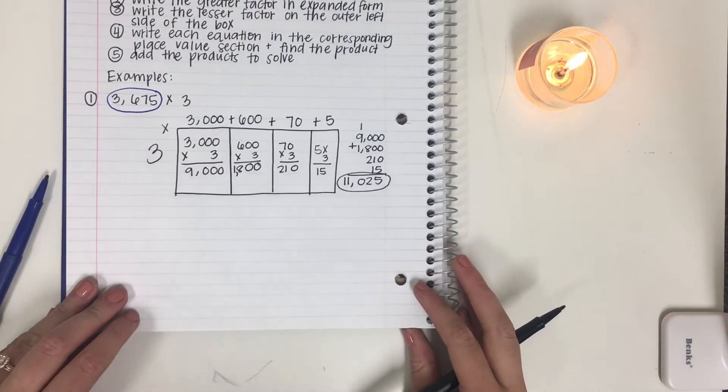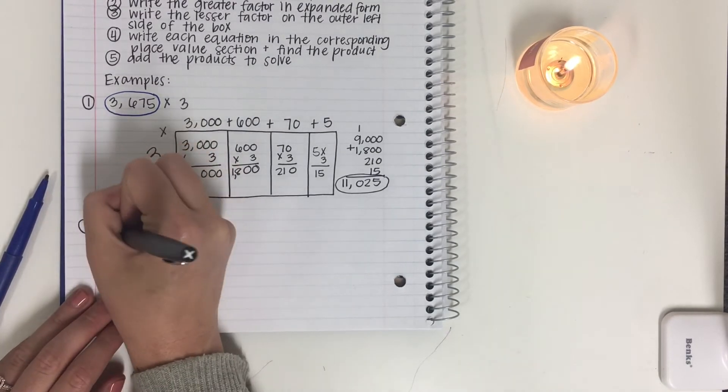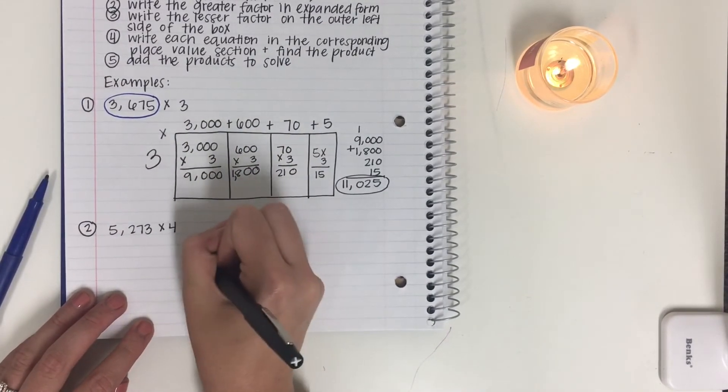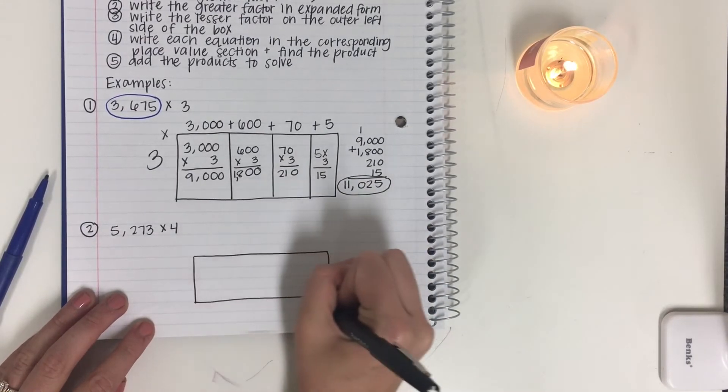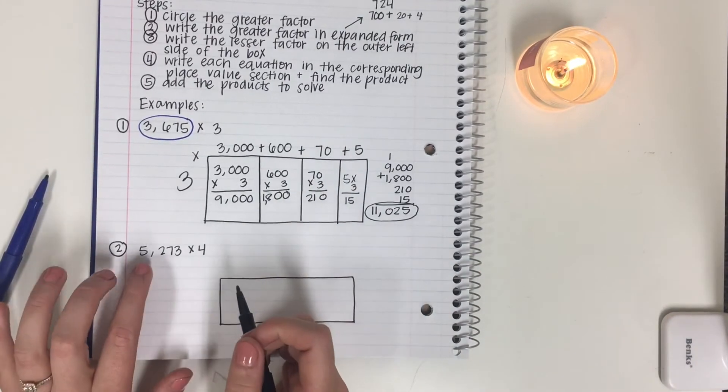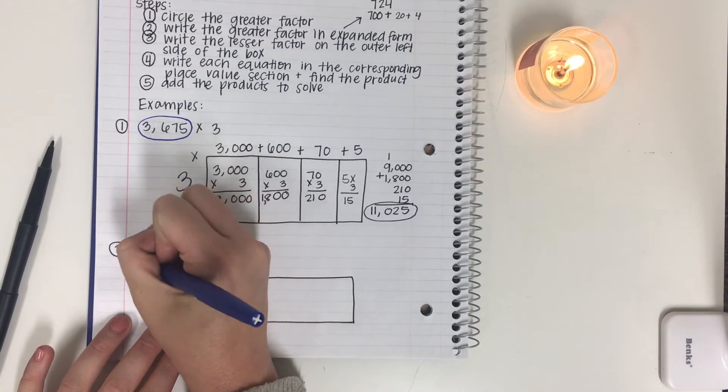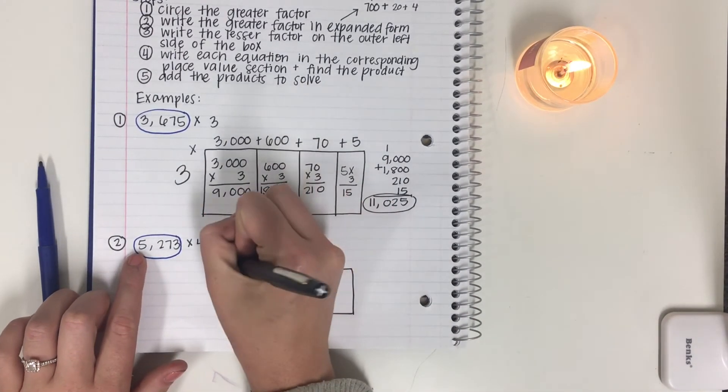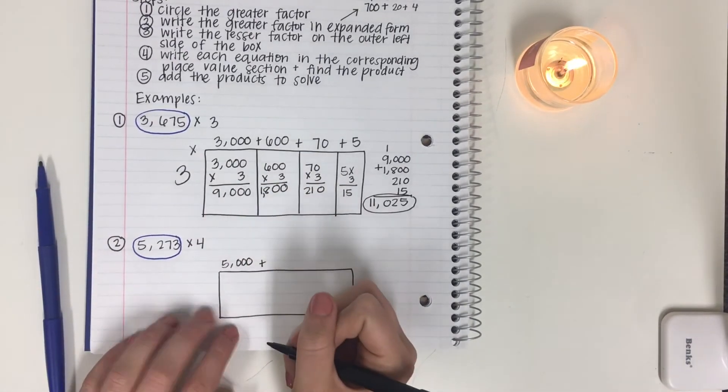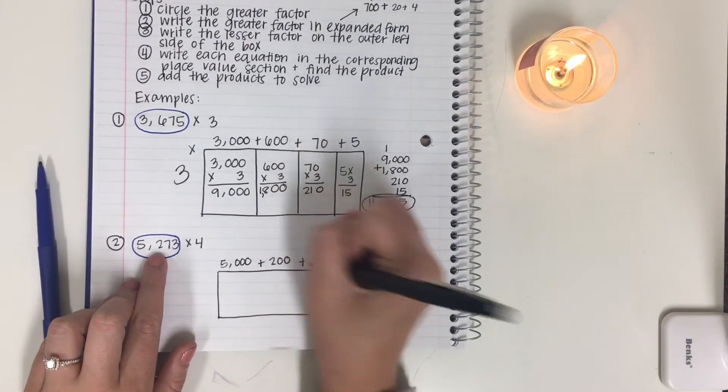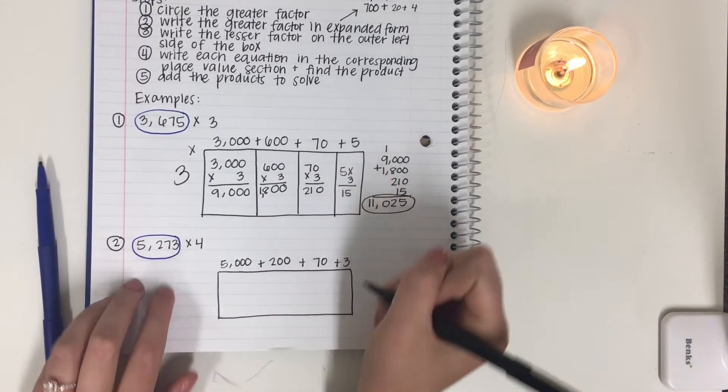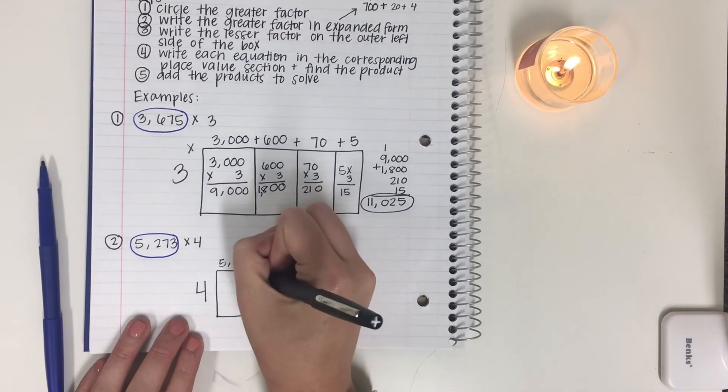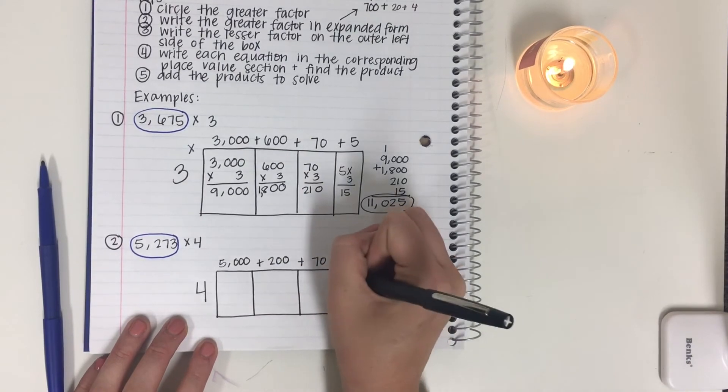5,273 times 4. First, let's draw our box. Step 1, circle the greater factor. My greater factor is 5,273. Step 2, write the greater factor in expanded form. So 5 is in the thousandths place, so it's going to be 5,000 plus the hundredths place, we got 200 plus 70 plus 3. Step 3, write the lesser value on the outer side of the box. So big 4. Now we're going to section out our place value sections. So we have our thousandths place, hundreds, tens, and ones.